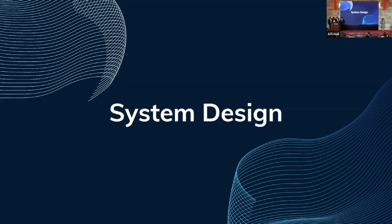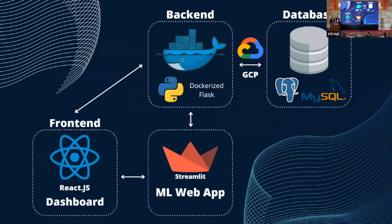For our system design, we started by dockerizing a Flask Python app hosted on a virtual machine, and we used two databases — a MySQL one and a PostgreSQL one. We used MySQL as the primary integration database and PostgreSQL as backup, both hosted on GCP (Google Cloud Platform). For the front-end, we used React.js to develop our landing page and a dashboard accessible after a successful login.